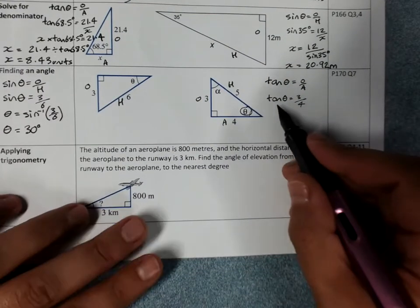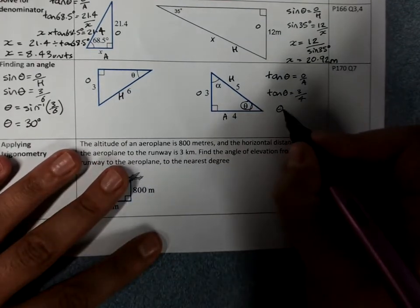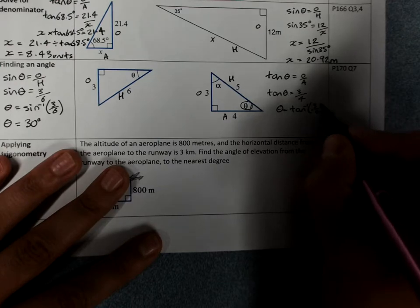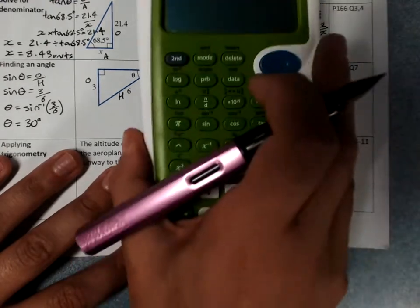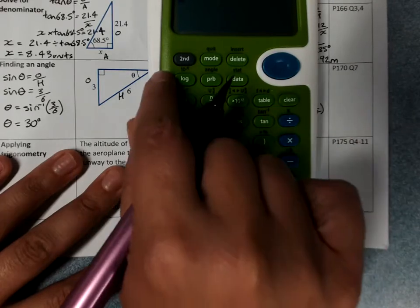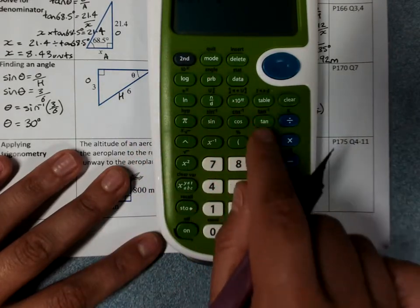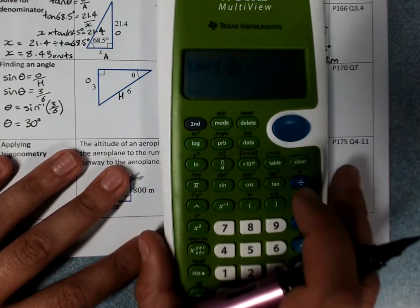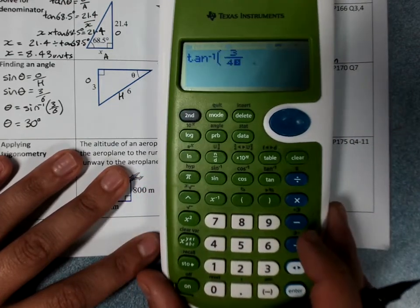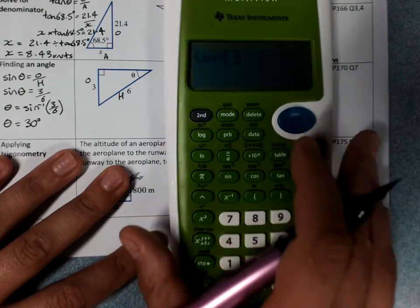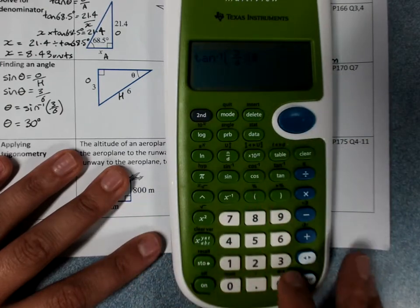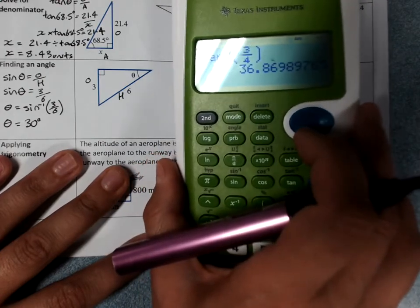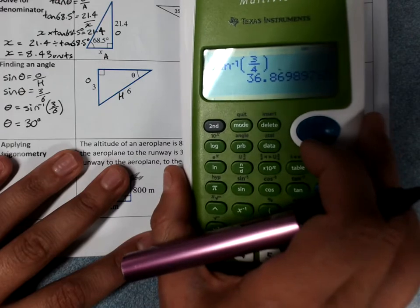I was finding I have tan theta. I want theta on its own. That means inverse tan of 3 quarters. Second tan 3 over 4. We'll use a fraction key this time. Hop out of the fraction with the arrow. Brackets and enter.